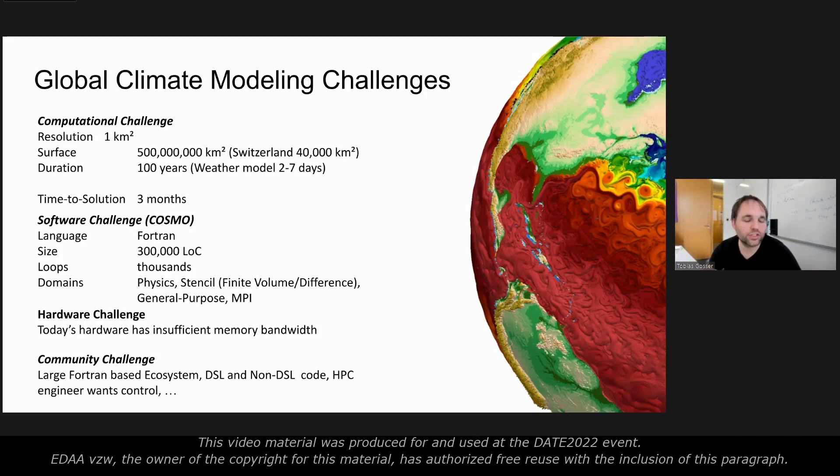I think this is particularly interesting for this workshop. We have this computational challenge—a lot of compute that needs to be executed. There's a software challenge with complex software systems that need to be migrated. There's a hardware challenge to move to modern, highly specialized hardware. But the last challenge, and almost the most important one, is a community challenge. We have a large Fortran ecosystem, DSL and non-DSL code, and HPC engineers want a lot of control over what they're doing. Finding a solution that fits well with different communities and allows us to work together and exploit synergies is really key for all of us to contribute together to improve our capabilities of doing climate modeling.